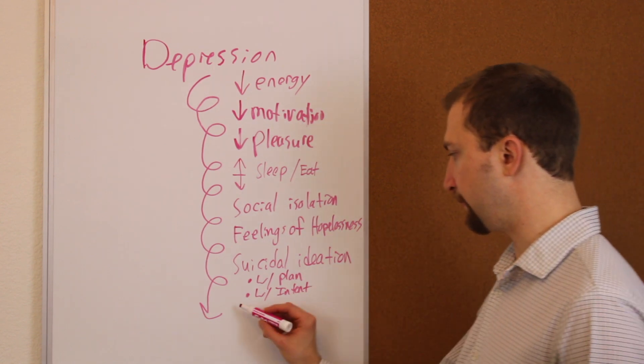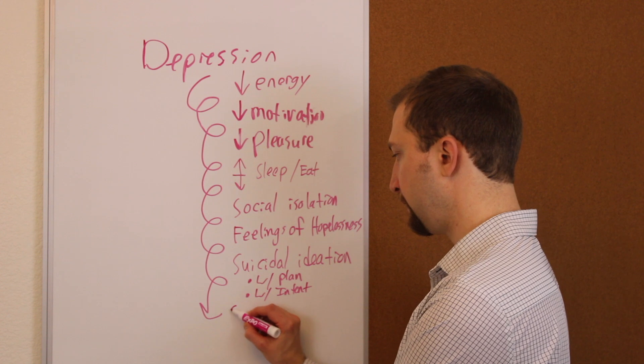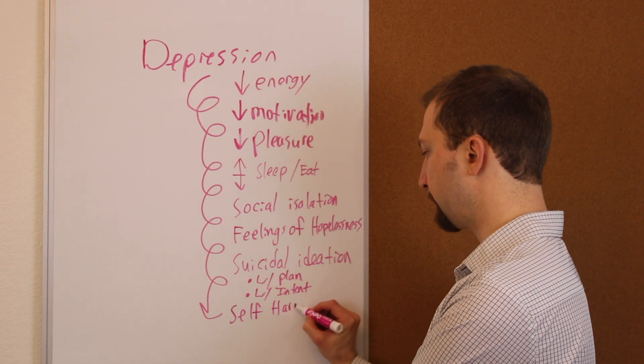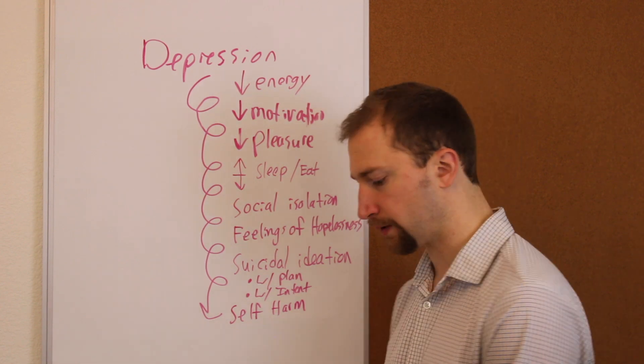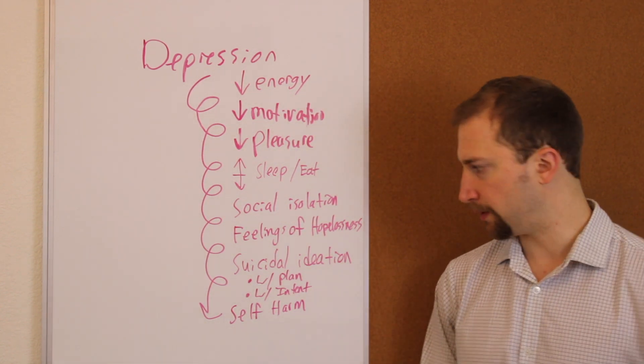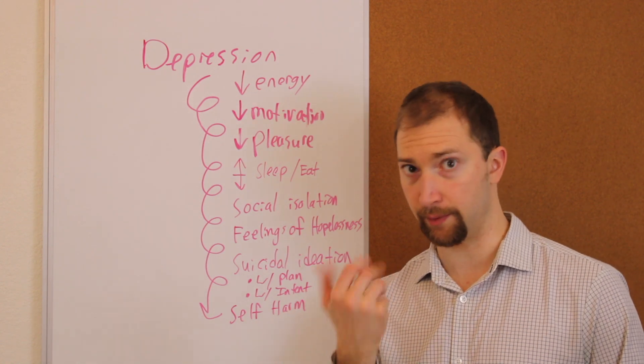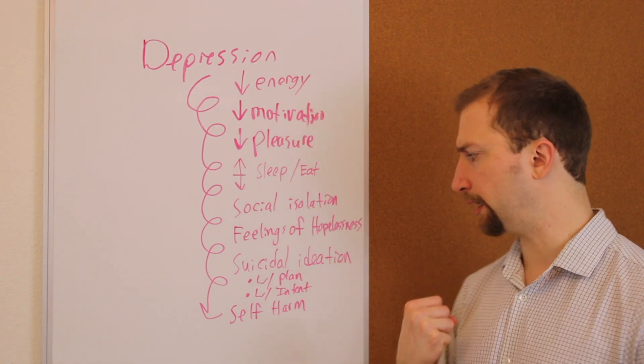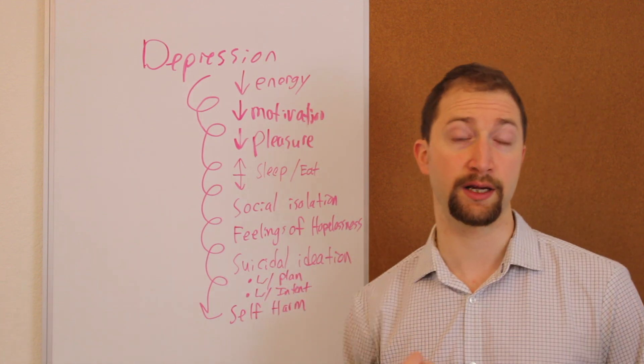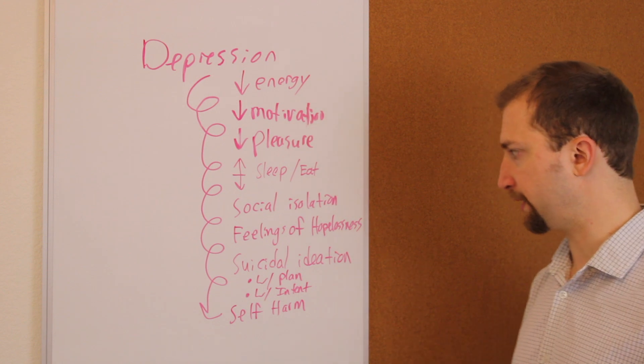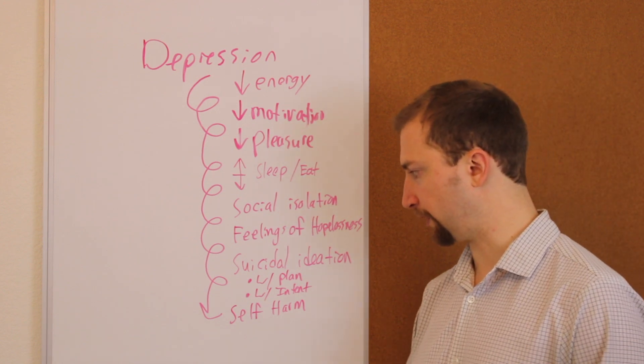Underneath all of that, at the very bottom, usually we have either a suicide attempt or self-harm to some degree. There are many ways to self-harm. It doesn't have to be a suicide attempt. It could be cutting, or is a common one, or burning your skin, or overdosing on medications on purpose, things like that. Just being self-destructive to yourself.